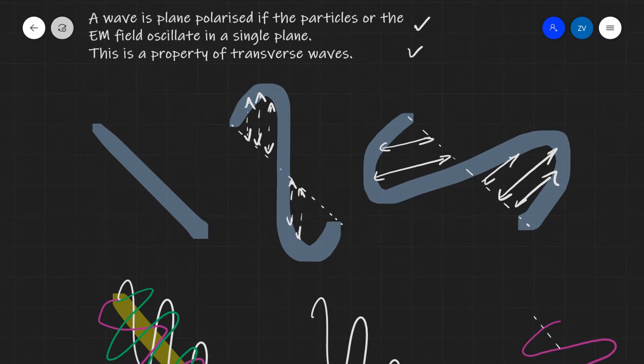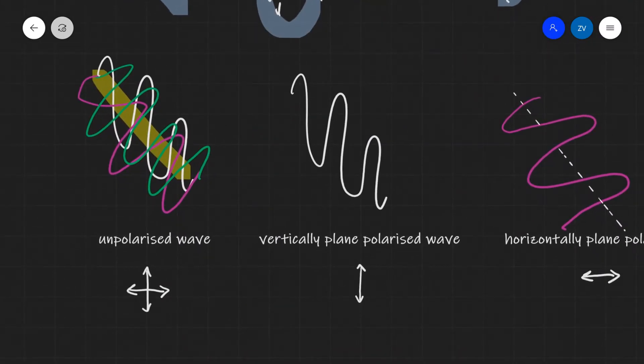Let's start off with some unpolarized waves. For instance, sunlight tends to be unpolarized, so this means that the electromagnetic field is oscillating in many different planes. Some of it is going to be in the horizontal plane, some of it is going to be in the vertical plane.